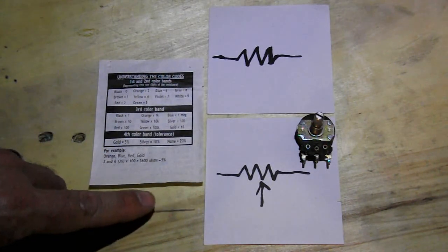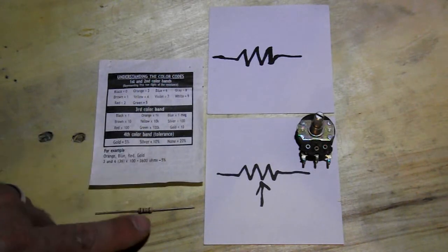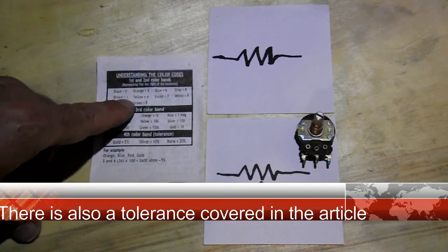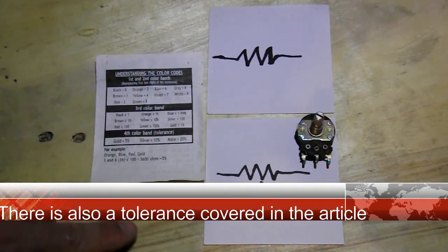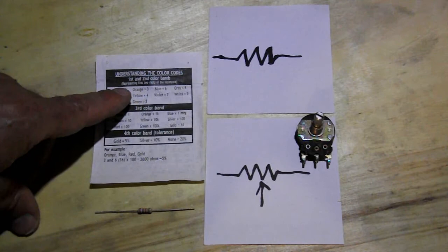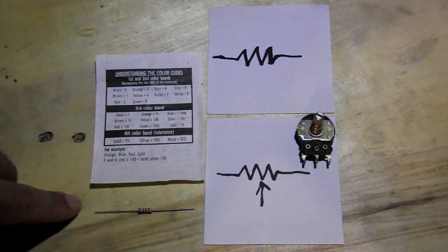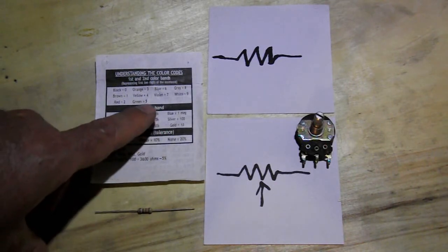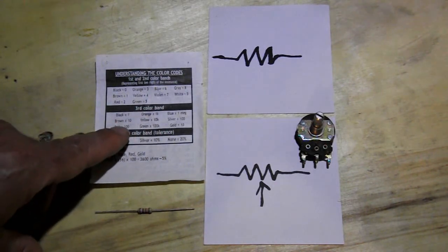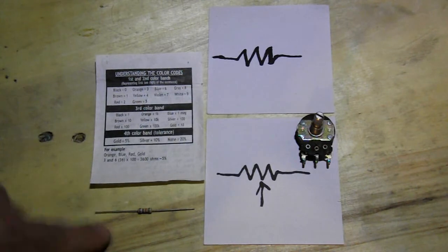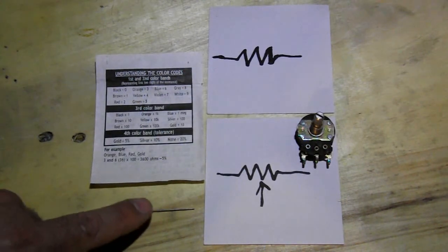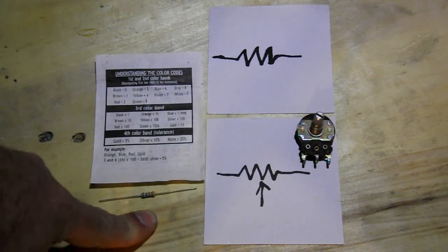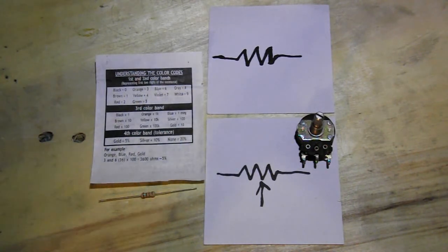Now you're here with your brown, black, red. So you take your first color brown, and that equals one. The next color is black. So that's zero. So you have ten. Very simple. And the next color is red. So that's your multiplier. And red is times a hundred. So ten times a hundred is a thousand. So that's a one thousand ohm resistor, or one K for short. One K ohm resistor.